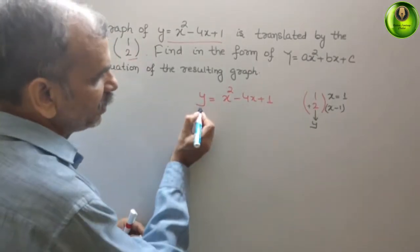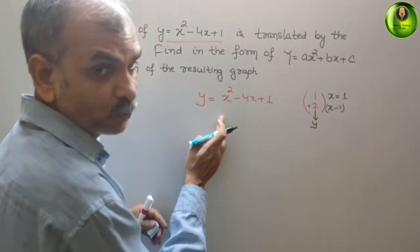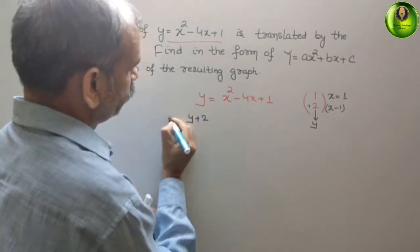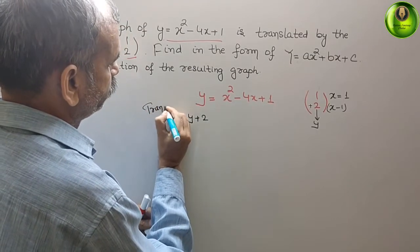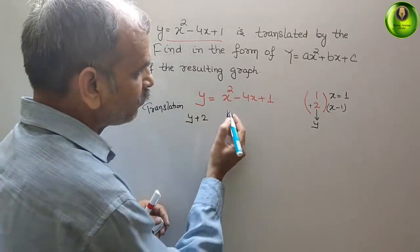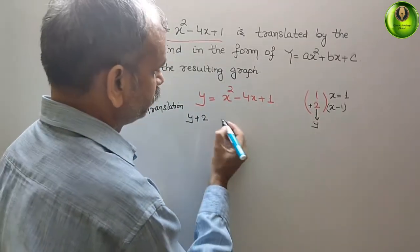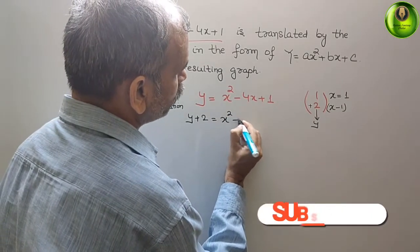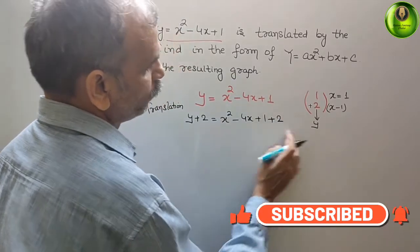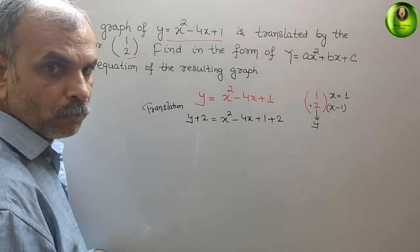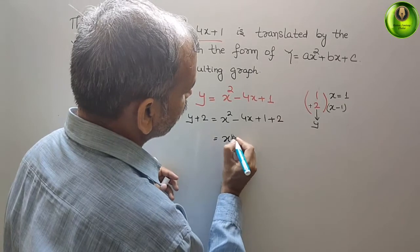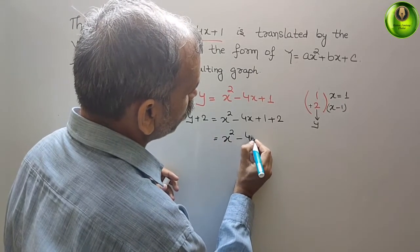If you go for a translation, translation. If we are translating in y, that means that this is your y plus 2. So, it will give you x square minus 4x plus 1 plus 2. This is in y axis. Now, that is equal to, we can say, is x square minus 4x plus 3.